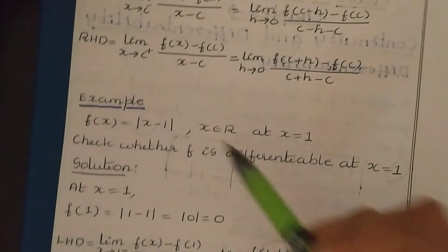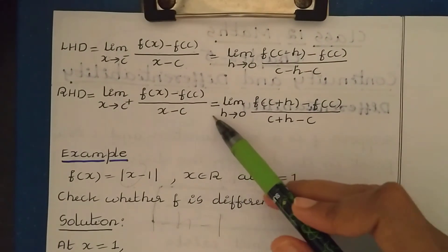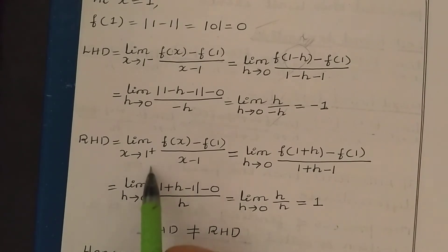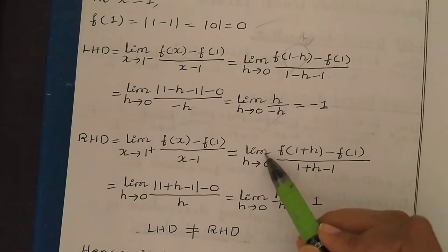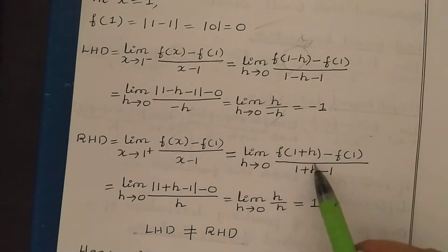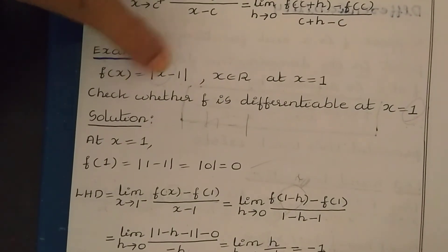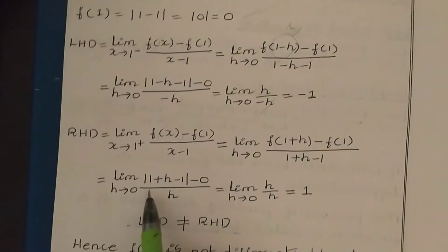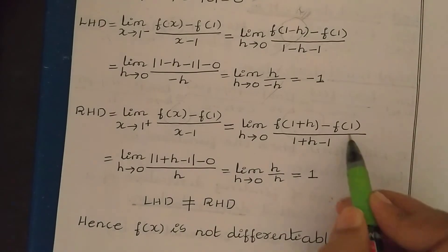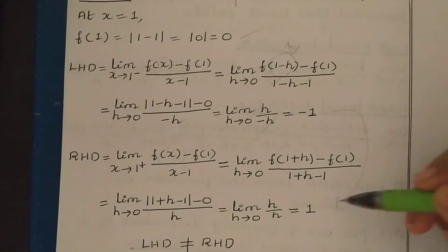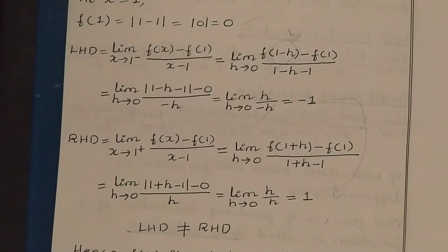Similarly, for the right-hand derivative, wherever you have the point c, replace with c plus h. Here c is 1, so: limit x tends to 1 plus, f(x) minus f(1) divided by x minus 1, which equals limit h tends to 0, f(1 plus h) minus f(1) divided by 1 plus h minus 1. Since x is 1 plus h, f(1 plus h) is mod(1 plus h minus 1) is mod(h). So we get limit h tends to 0: h minus 0 divided by h, which gives h by h equals 1. So the right-hand derivative is 1. You can observe that the left-hand derivative value is not equal to the right-hand derivative value. Therefore, we can say the function is not differentiable.